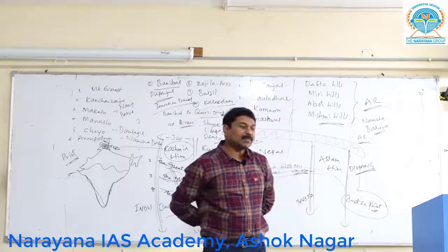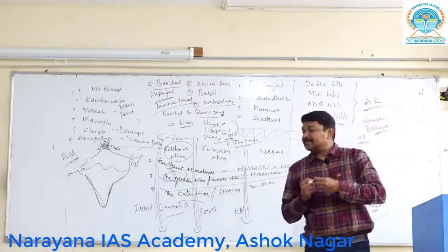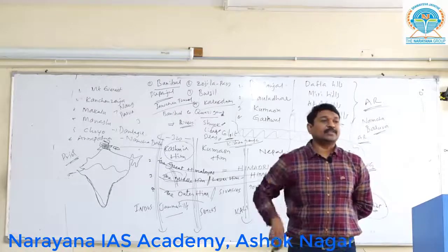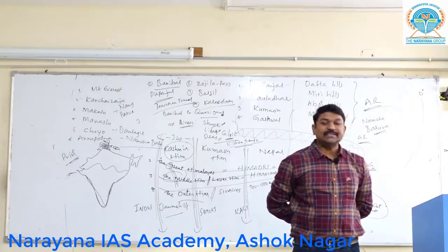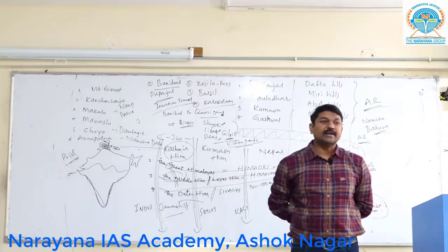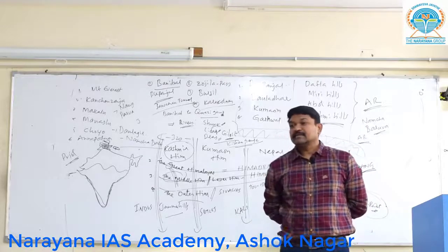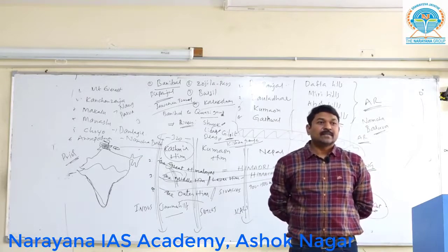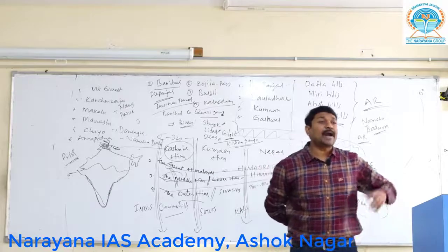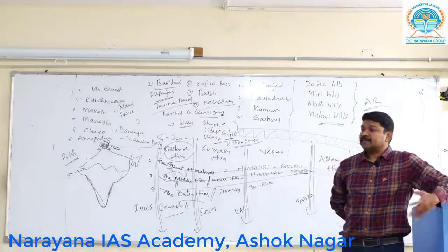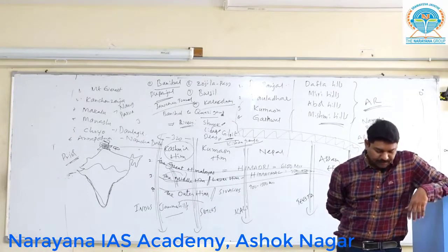The plains of Kashmir Himalayas include Aksai Chin, Depsang (D-E-P-S-A-N-G), Deosai (D-E-O-S-A-I), and Soda Plains. These are elevated flat lands — completely barren plains, which is why Ladakh is considered a cold desert.